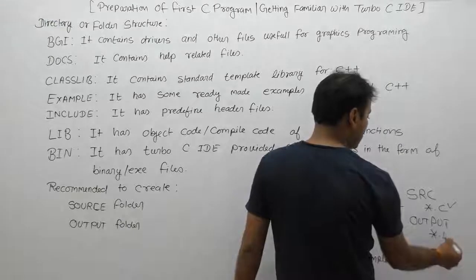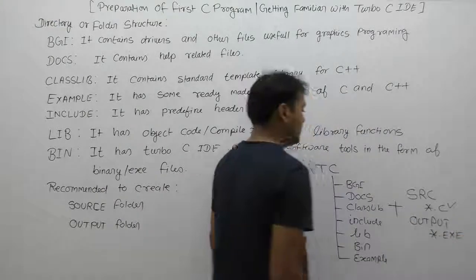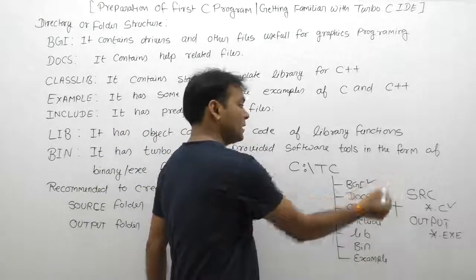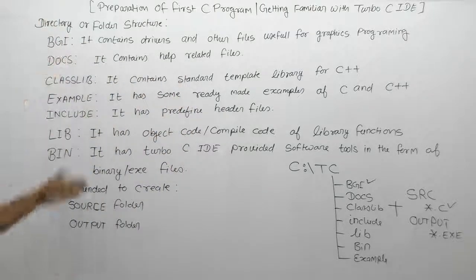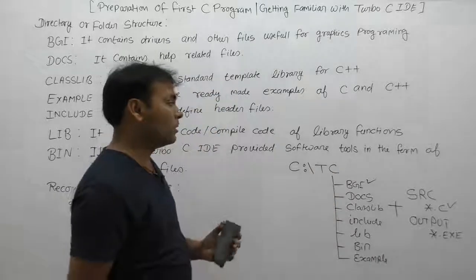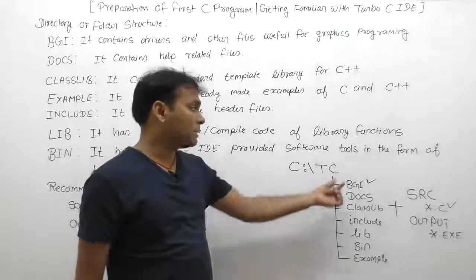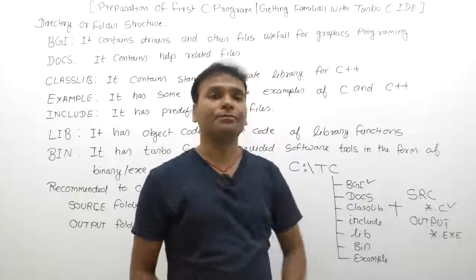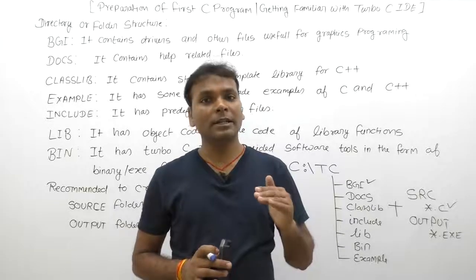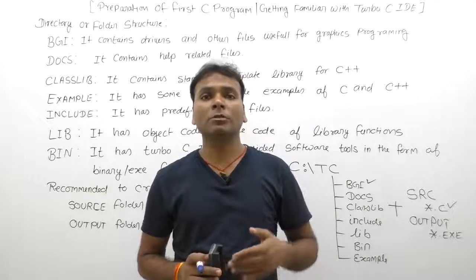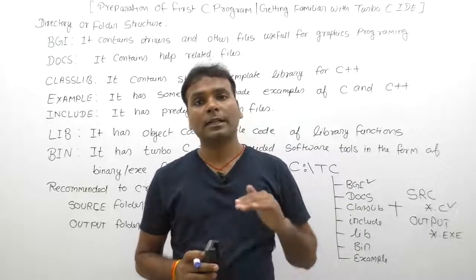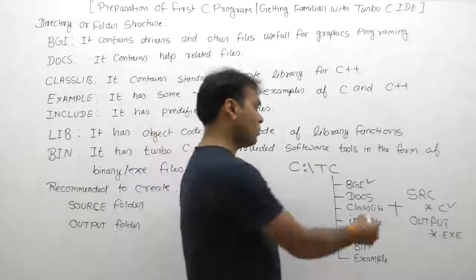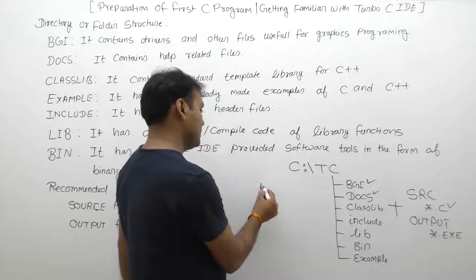Now let us discuss the purpose of each folder provided along with the Turbo C software. First, the BGI folder: all graphics-related driver software are available inside BGI. If you require any third-party graphics software, you can copy it inside BGI. All predefined graphics driver software required for graphics programming is already available inside BGI folder by default.